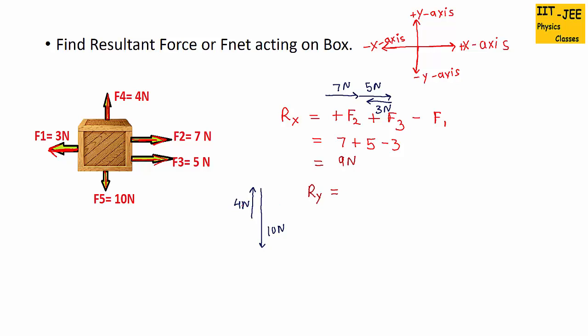So Ry equals positive 4, because it's up, and negative 10, because 10 is downward. So this will give us minus 6N.